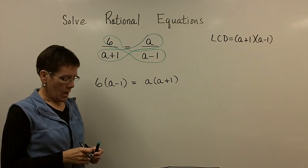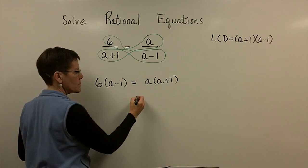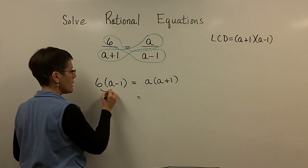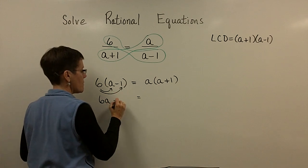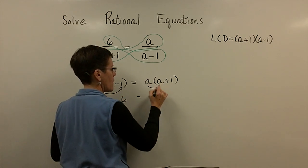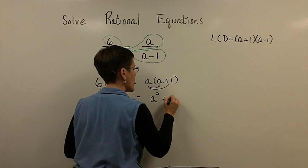And so now, I'm kind of wondering how this is going to come down here. I'm going to go ahead and distribute this. So I have 6a minus 6. And here, I have a squared plus a.